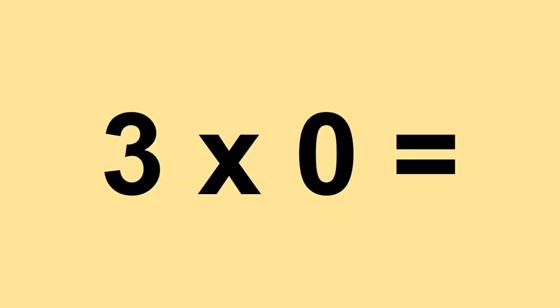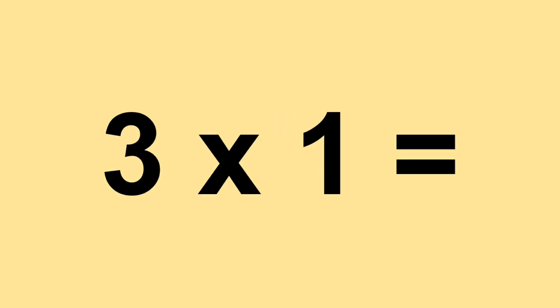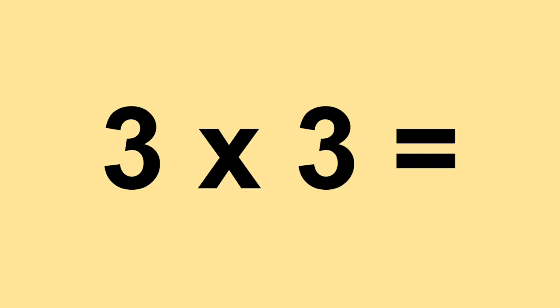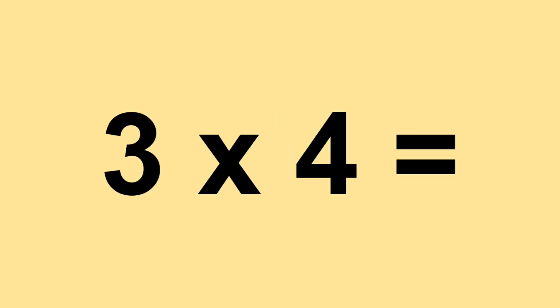Three times zero equals zero. Three times one equals three. Three times two equals six. Three times three equals nine. Three times four equals twelve.